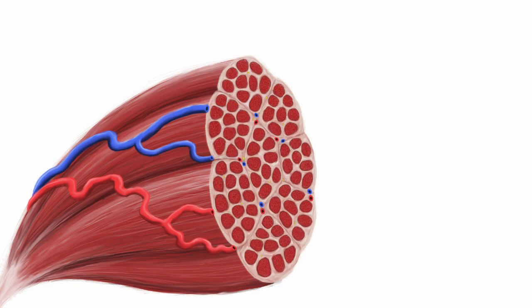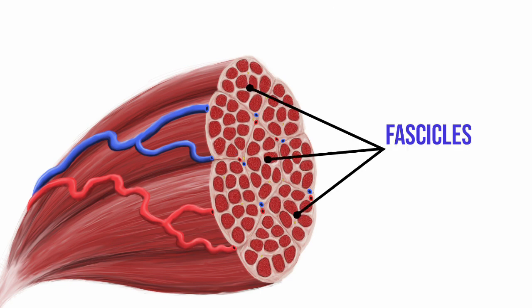If we cut into the muscle we can see it is composed of several parts. It is filled with blood vessels necessary for supplying the large amounts of nutrients muscles require and nerves necessary to make the muscles contract. It is composed of subsections called fascicles.